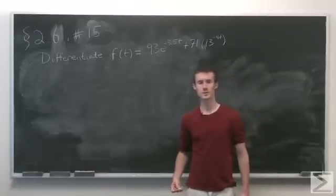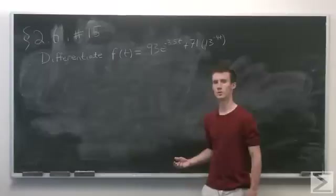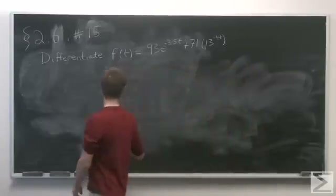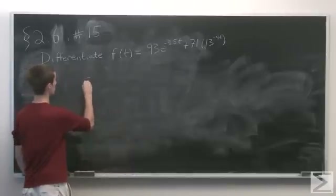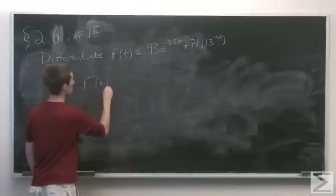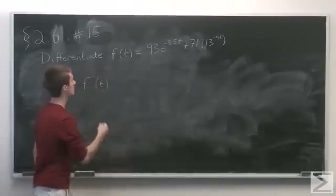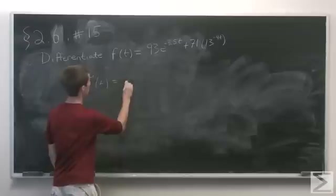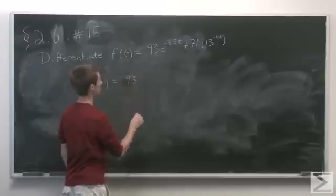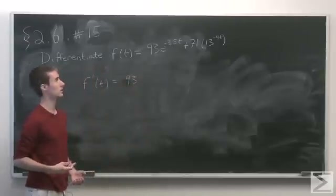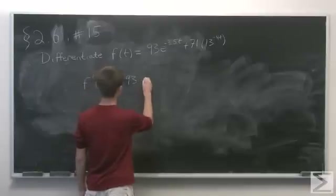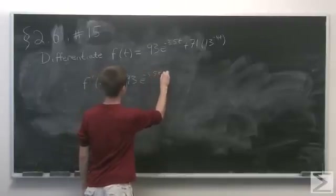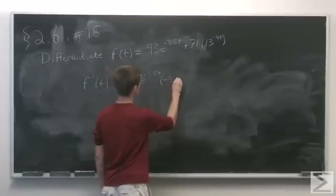In problem number 15 of section 2.6, we're asked to differentiate the function f of t written above. The first term of f of t is just an exponential function, so this is going to be multiplied by 93. We need to multiply by the derivative of e to the negative 3.5t, which, invoking the chain rule, gives us e to the minus 3.5t times minus 3.5.